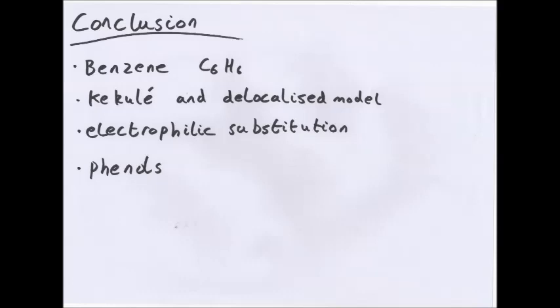So in conclusion, we have benzene, which is C6H6, the Kekulé model, which is three double bonds, and a delocalised model, which is a delocalised ring of pi bonds. It undergoes electrophilic substitution and you have phenols as well. And that's all. As usual, like, comment, tell me what you think, see if you want any more. And thank you for watching.